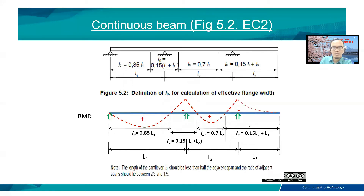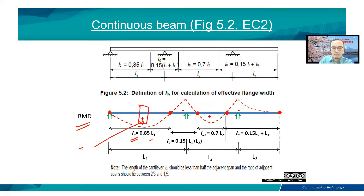This is the bending moment diagram for this beam. As mentioned, these are the positions of zero moment. The distance from one point of zero moment to another is defined as L_0. If the section is located in the span, tension occurs at the bottom and compression at the top. If the section is located near the joint, compression occurs at the bottom part of the beam.